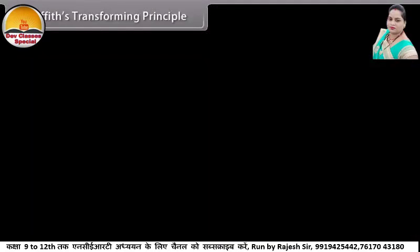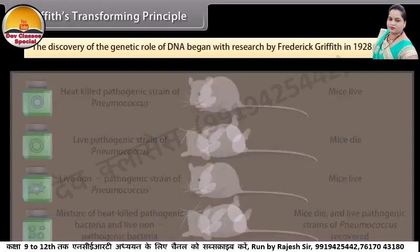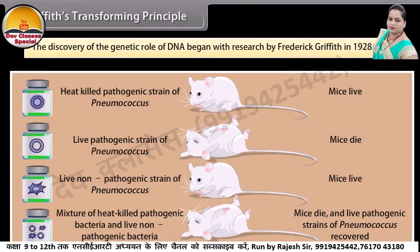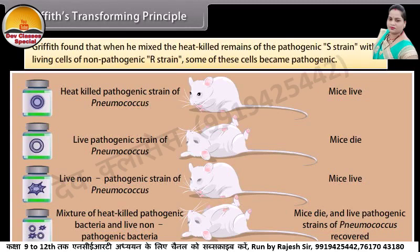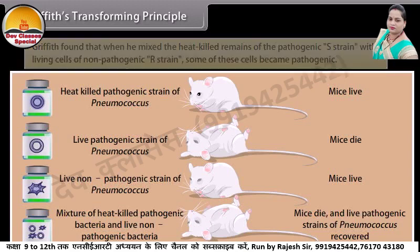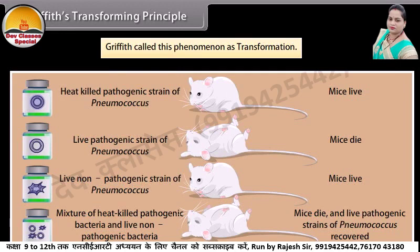Griffith's transforming principle. The discovery of the genetic role of DNA began with research by Frederick Griffith in 1928. Frederick Griffith worked on two strains, pathogenic and non-pathogenic, of Streptococcus pneumoniae. Griffith found that when he mixed the heat-killed remains of the pathogenic S strain with living cells of non-pathogenic R strain, some of these cells became pathogenic. Griffith called this phenomenon transformation.